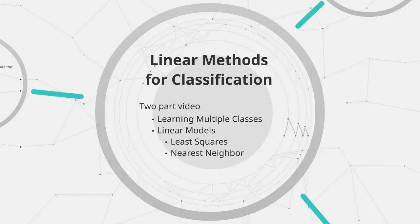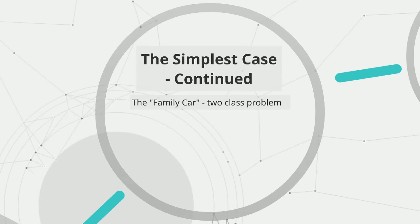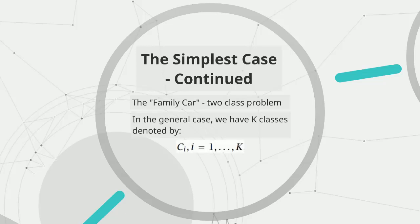In the simplest case, the family car two-class problem expands. In the general case, we have k classes denoted by c_i, where i goes from 1 to k. So if we don't just have family cars, we also have sports cars, luxury cars, and so on. In machine learning for classification, we want to learn the boundaries separating instances of one class from all others. Thus, we view a k-class classification problem as k two-class problems.